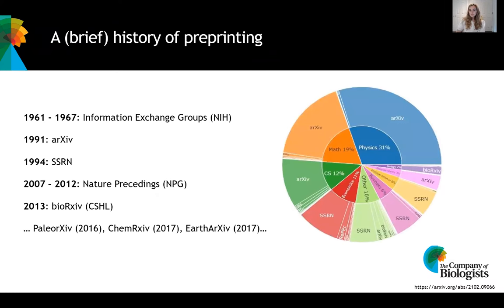The history of preprinting is actually a little bit longer than you might think. The idea of sharing research prior to it formally being published began in the 1960s with information exchange groups launched by the NIH. They weren't very long-lived, but it wasn't until the 1990s that we saw the launch of preprint servers similar to what we're familiar with now. In 1991 we saw the launch of arXiv, an online repository for research predominantly in physics and maths. It began as a kind of email service and then evolved into the preprint server we know now, and it's really the arXiv model that other preprint servers have been based on.